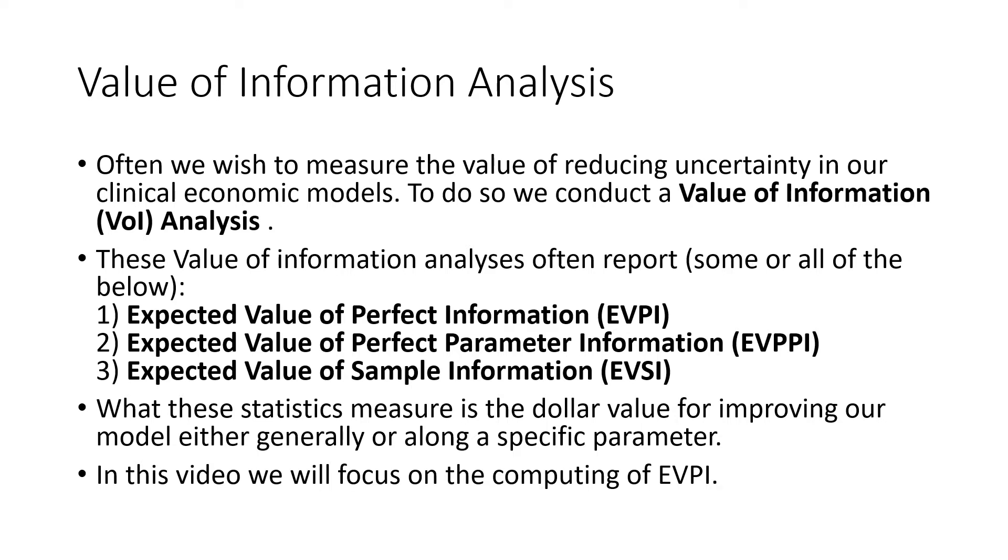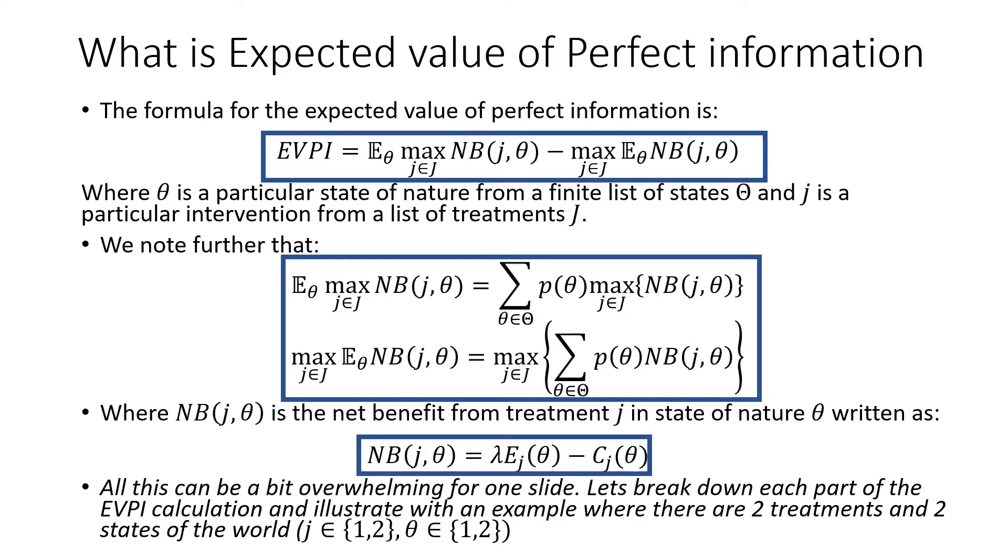In this video, we'll focus on computing the expected value of perfect information. The formula we use is the following: the expected value with perfect information minus the expected value without perfect information, where theta is a particular state of nature from a finite list of states capital theta, and J is a particular intervention we're considering from a list of treatments.